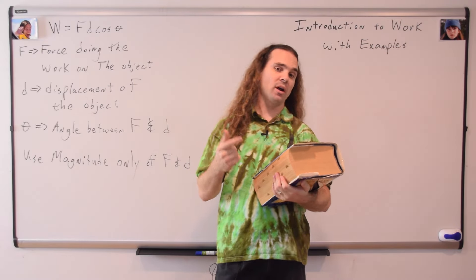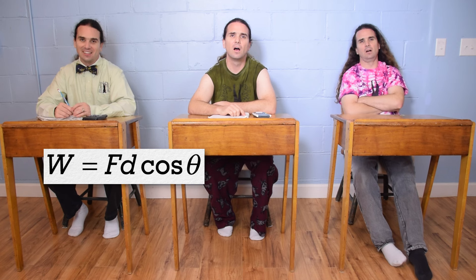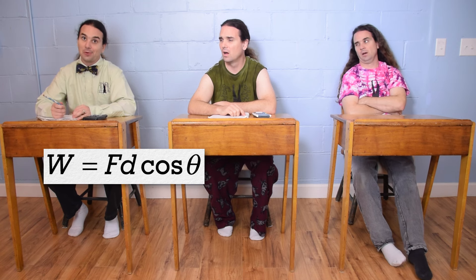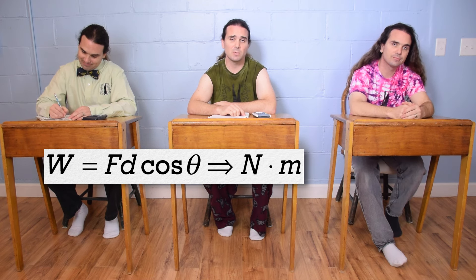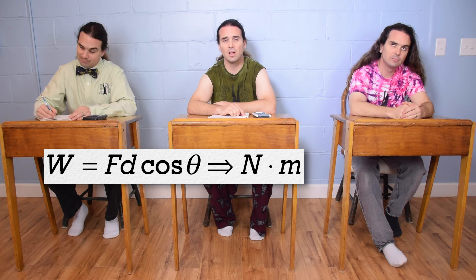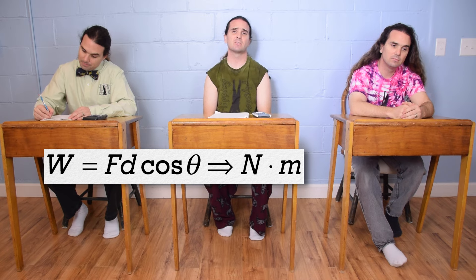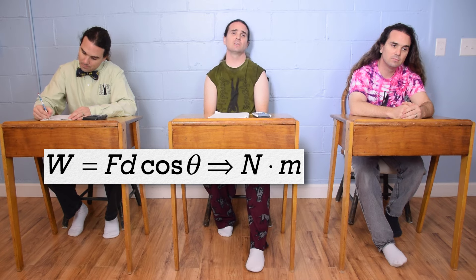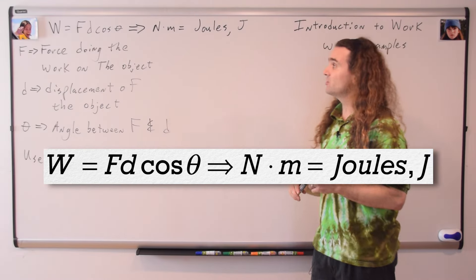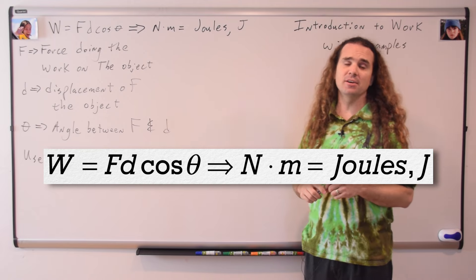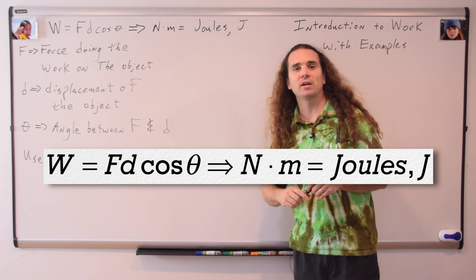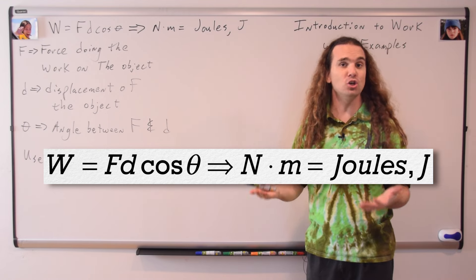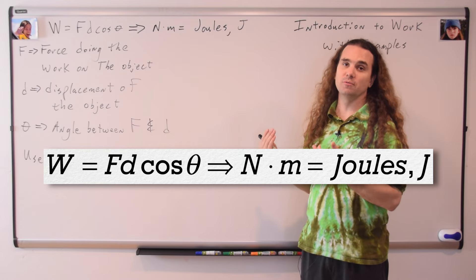Bobby, could you please work out the dimensions for work? Force is in newtons, displacement is in meters, and the cosine of theta doesn't have any dimensions, so work is in newton meters. Yes, work has units of newtons times meters, which we give a special name — it's called joules, and we use a capital J to identify joules. So we have a new unit: it is called joules or newton meters.